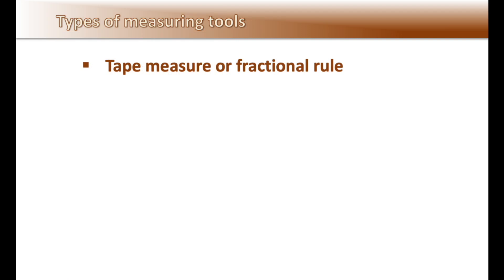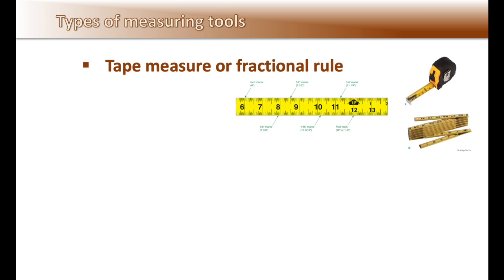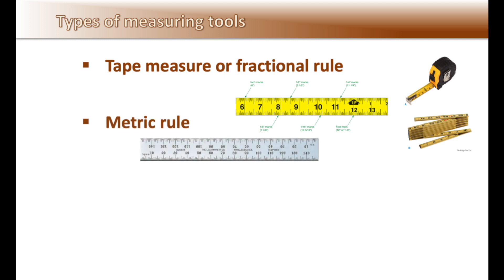There are many types of measuring tools used in the construction industry. They include bench rules, steel rules, and tape measures, the most common being the tape measure. A metric rule is used for designs using the metric system, which is very uncommon in the United States and only briefly covered in this video.